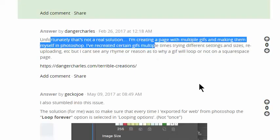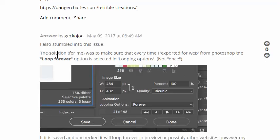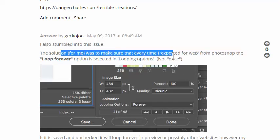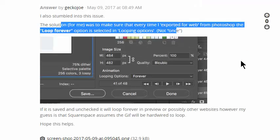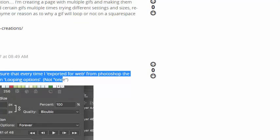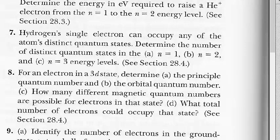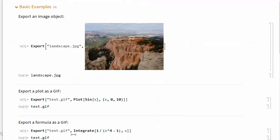And then somebody else says, unfortunately, that's not a real solution. I'm creating a page with multiple GIFs and making them myself in Photoshop. Anyway, the solution for me was to make sure that every time I exported for web from Photoshop, the loop forever option is selected in the looping options. Not once. Anyway, that is not... I don't think that's the problem here, because I'm using Mathematica and there's nothing in there. There's nothing in this export command that tells it to stop after two loops, I'm pretty sure.